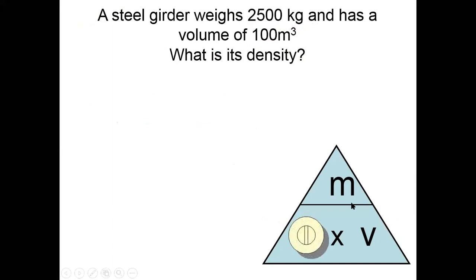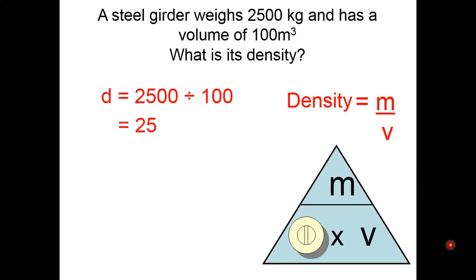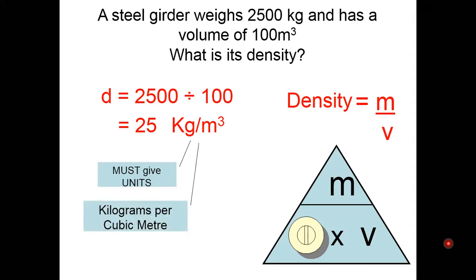The formula for density is density equals mass over volume. If we substitute, we shall have density as 2500 divided by 100, and that is 25. But we still have to put the units. Since the mass is in kilograms and the volume is meters cubed, that means the units for density are kilograms per meter cubed. So we always have to put units for density, and in this case it's kilograms per meter cubed.